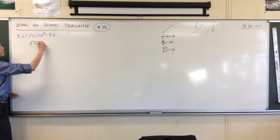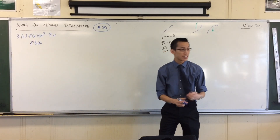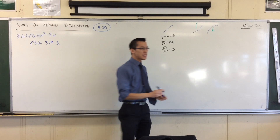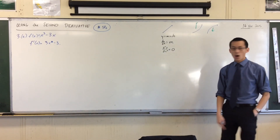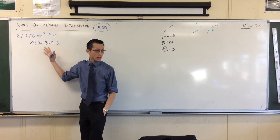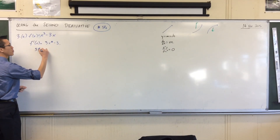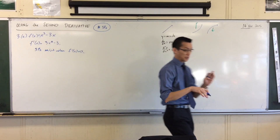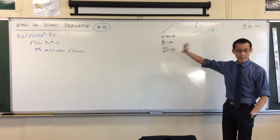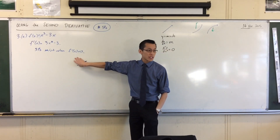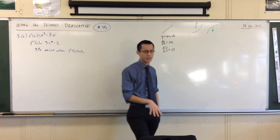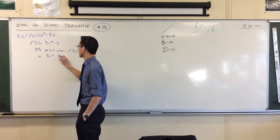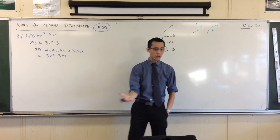First we need the first derivative, which you can read off the equation: f'(x) = 3x² − 3. Now, stationary points occur where the first derivative equals zero. I'll say: stationary points exist when f'(x) = 0. These connecting sentences are critically important — they convey that you know what's going on and ensure you don't just have a series of equations strung together for no apparent reason. So I'm solving 3x² − 3 = 0.